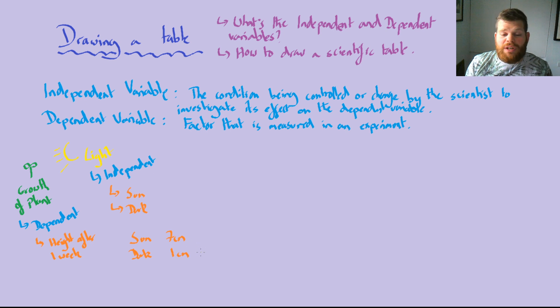They have the sun has grown to an almighty seven centimeters and in the dark it's grown to one centimeter. And maybe they repeated this with a number of different things. They have one that went to 1.5 centimeters and one that got to one centimeter, and here we had one that got to eight centimeters and also ten centimeters. So this is the data that they've managed to collect. But how do they then go about drawing this into a table and making it look nice and neat? So this is how they do it.